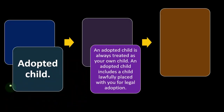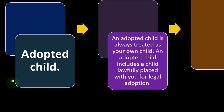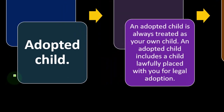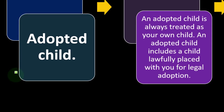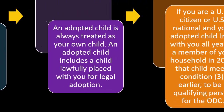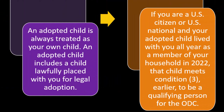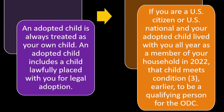Adopted child: an adopted child is always treated as your own child, including a child lawfully placed with you for legal adoption. If you are a U.S. citizen or U.S. national and your adopted child lived with you all year as a member of your household in 2022, that child meets condition 3 to be a qualified person for the ODC (Other Dependent Credit).